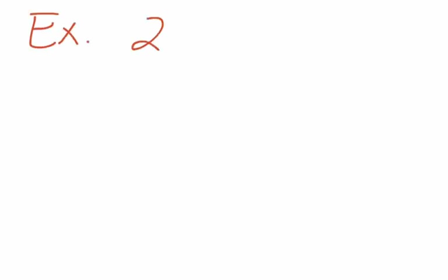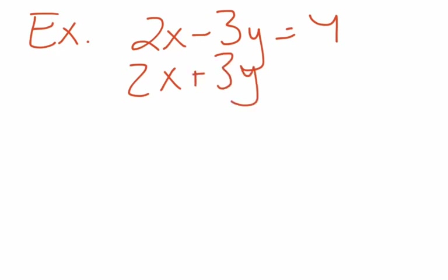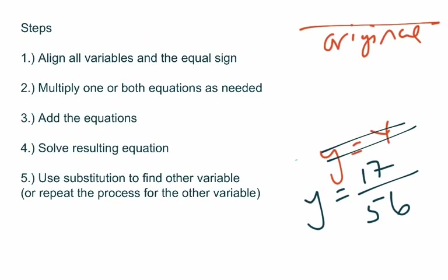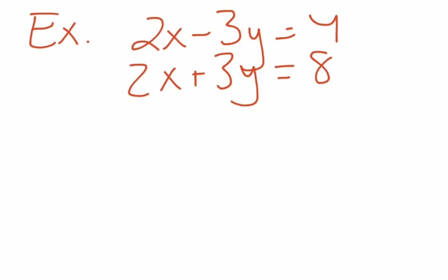The first example is the easiest version of this problem you could find. This is actually so easy that a lot of people could do it in their heads, or at least part of it. Step one is to line up all the variables and the equal sign. So we check: X's lined up, Y's lined up, equals lined up, constants lined up. For this one, that first step is already done.